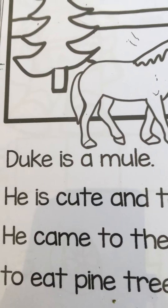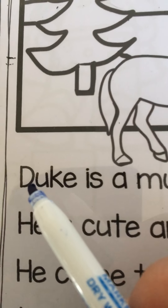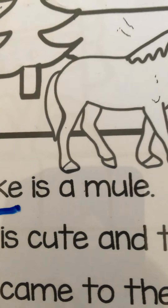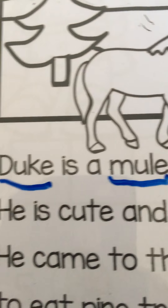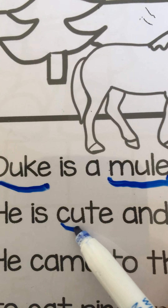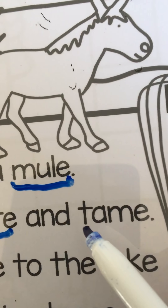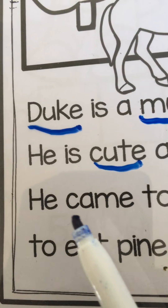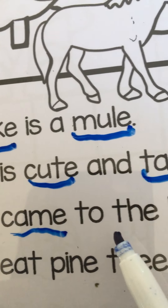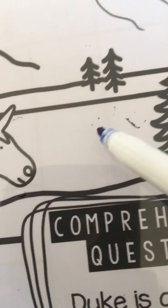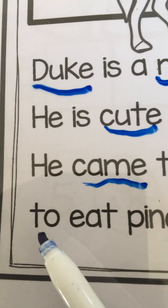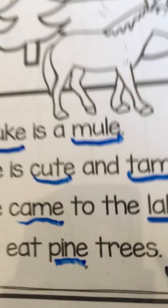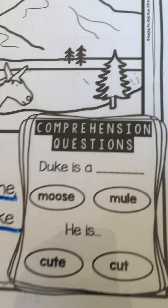Let's look for the words with the silent E. Do you see any words with the silent E? Duke — here's one. Duke is a mule — another one. He is cute and tame. That means he's gentle and nice. He came to the lake — this is the lake, it's the water.